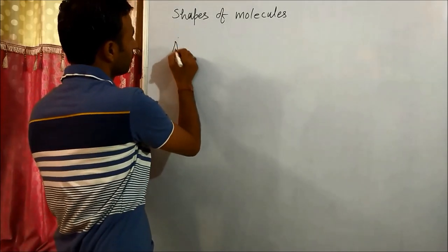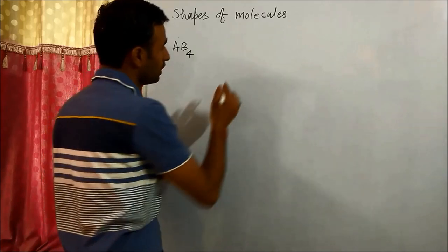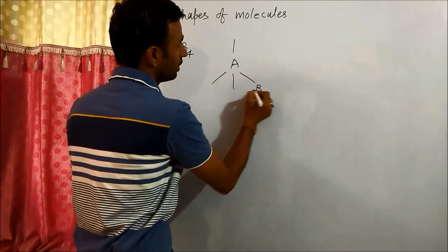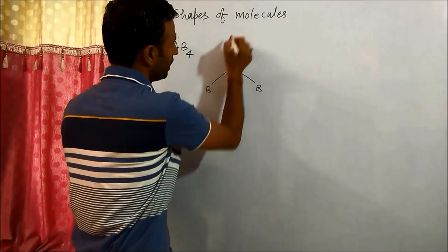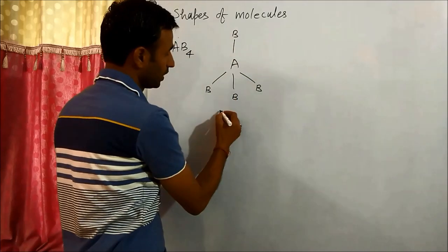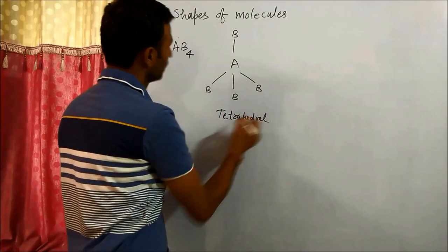For four pairs, the first case is if we have all bond pairs. The basic shape, geometry, or arrangement is tetrahedral.